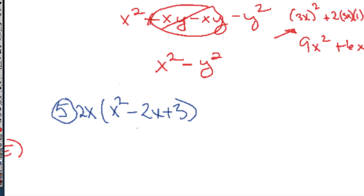So here we've got another distribution scenario. We're going to take the 2x times each of those three terms. So we have 2x³ minus 4x² plus 6x. And you're done.